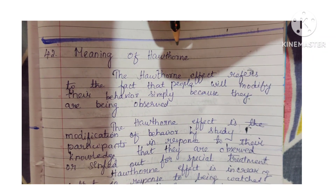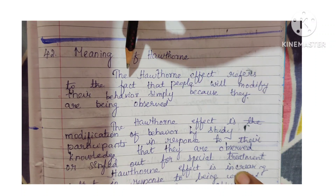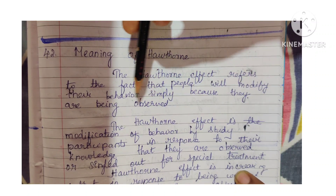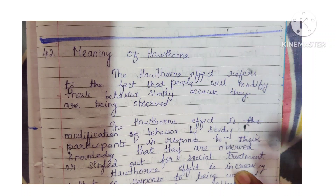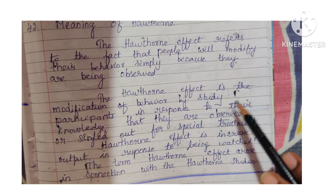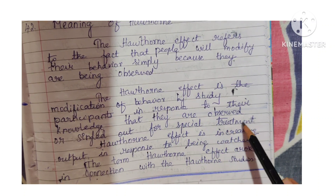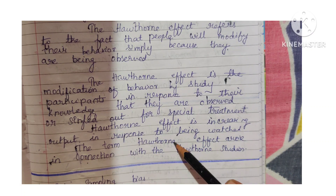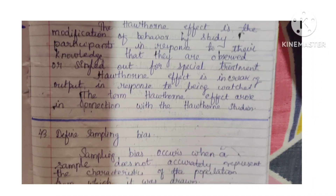Question 42: Meaning of the Hawthorne effect. The Hawthorne effect refers to the fact that people will modify their behavior simply because they are being observed. It is the modification of behavior by study participants in response to their knowledge that they are observed or singled out for special treatment. In short, the Hawthorne effect is increasing output in response to being watched. The term comes from the Hawthorne studies.